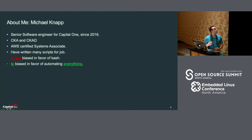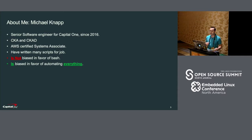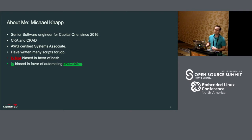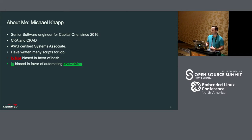So about me — I'm Michael Knapp. I'm a senior software engineer for Capital One. I have a lot of experience with Kubernetes and AWS. I am passionate about bash scripting. However, I don't believe that bash is the solution for everything. I'm much more emphatic about automating everything.